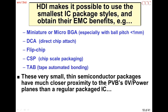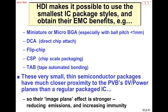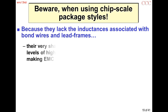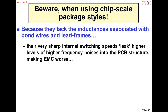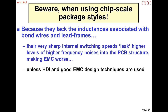On microwire boards, because they're very small and very thin, if you put a ground plane on layer one or layer two you get a very powerful image plane effect and much more effective shielding, which helps use those packages beneficially. When you don't have bond wires and lead frames from big packages, the internal switching speeds leak out into the PCB structure unless you use microwire techniques — and also good EMC design techniques. It's not just enough to use microwire; you have to use other good EMC design practices too.